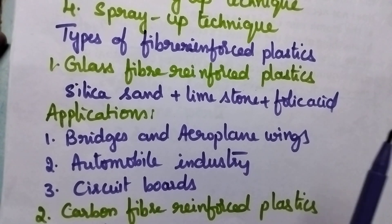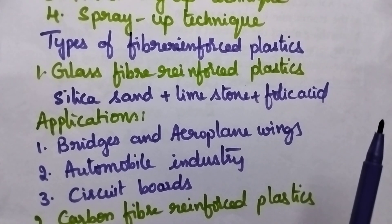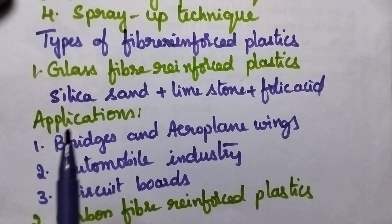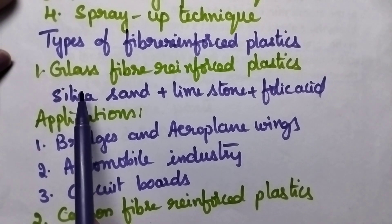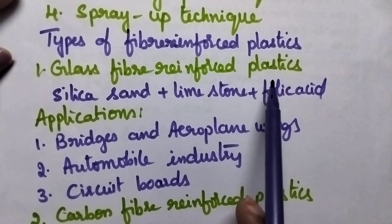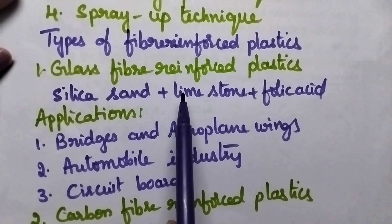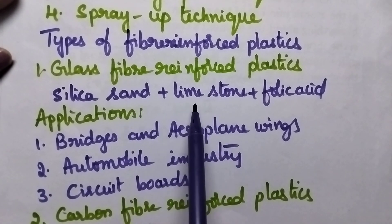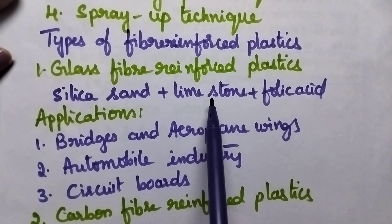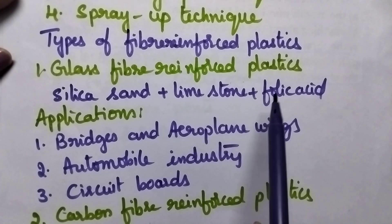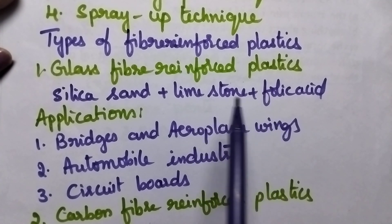There are three important types of fiber reinforced plastics. The first one is glass fiber reinforced plastic, obtained by mixing silica sand with limestone and folic acid. These are the three major ingredients that finally result in the formation of glass fiber reinforced plastics.